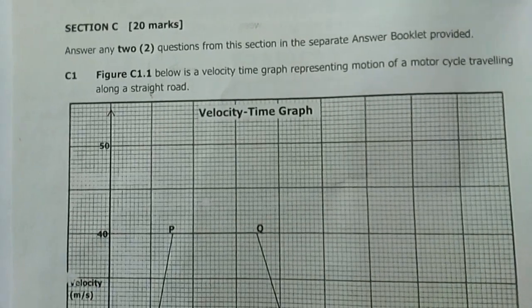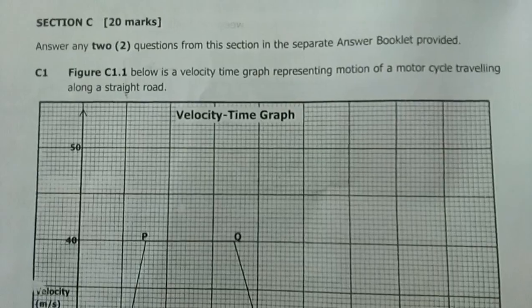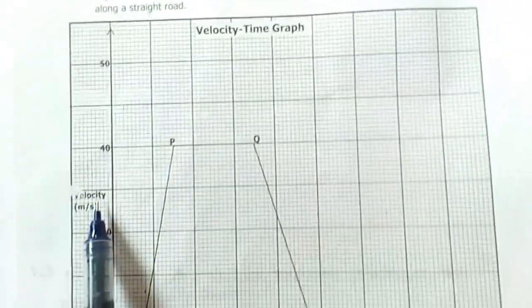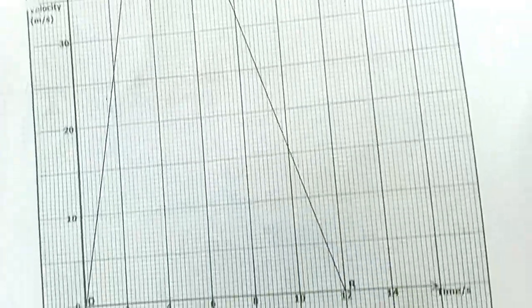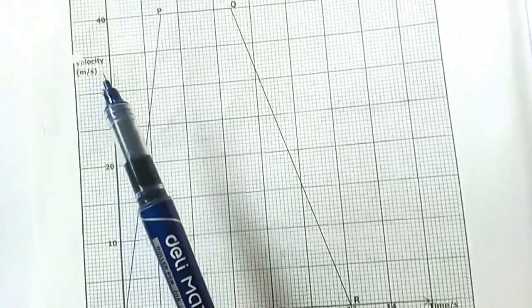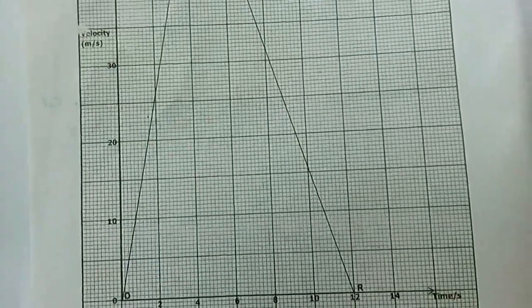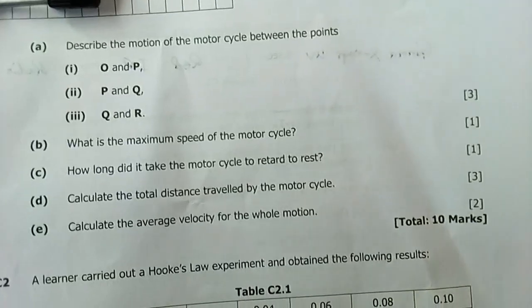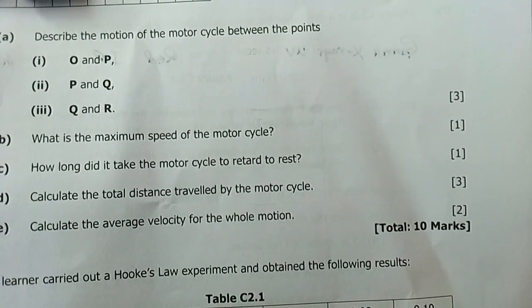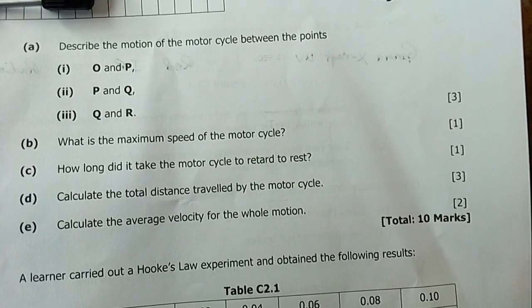This is science 1 2020, which is physics section C. It reads: answer any two questions from this section in the separate answer booklet provided. C1 below is the velocity-time graph representing motion of a motorcycle traveling along a straight line. This is our graph with the title, labeled axis, and from the labels you can tell the divisions what they mean. It is velocity against time.